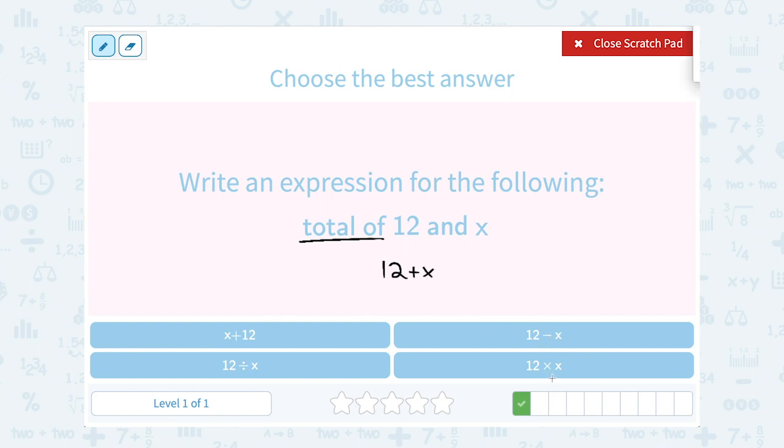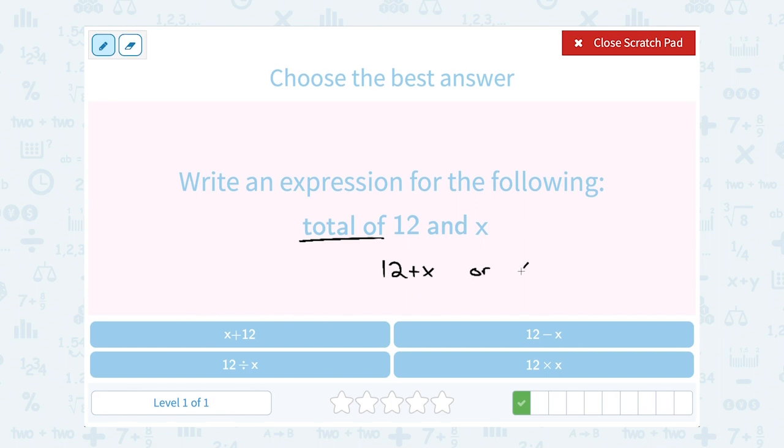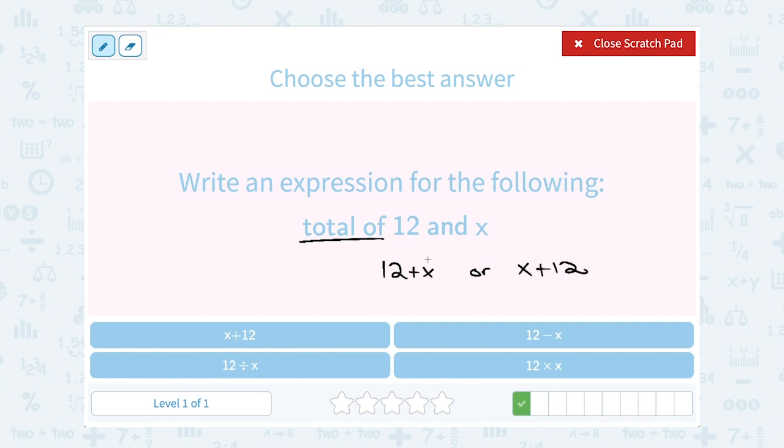So it wouldn't be subtraction, multiplication, or division. Now notice I said 12 plus x, and they said x plus 12. But notice those are the exact same things because you're allowed to add in any order, right? That's our commutative property of addition. So you could either say 12 plus x, or x plus 12.